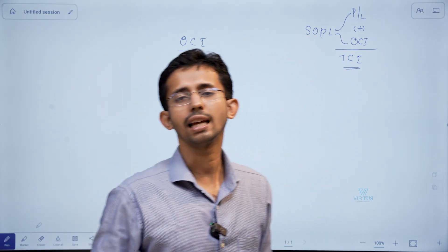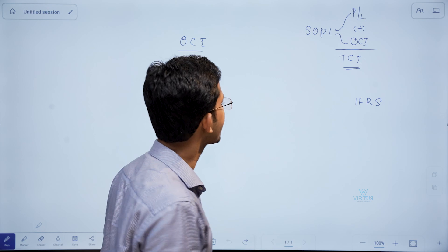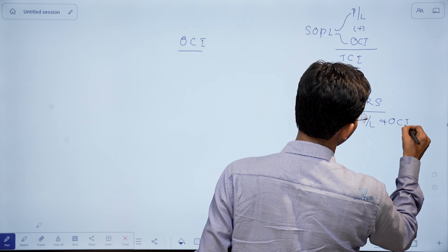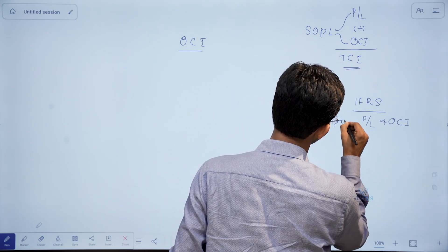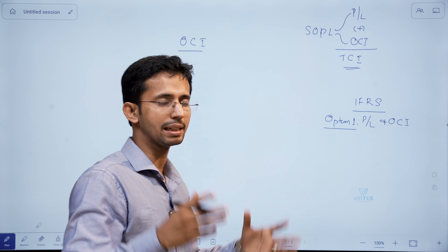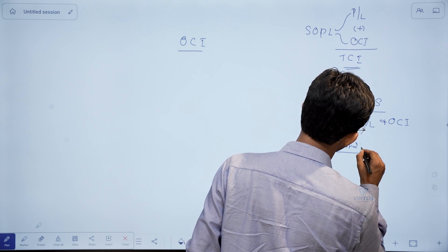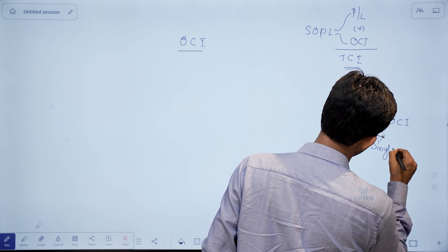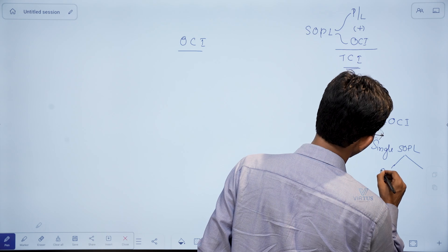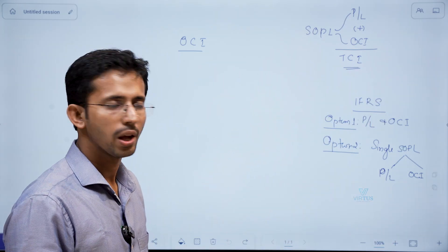If you look at the parent standard, IFRS, it gives an alternative or option to the presenters. Option one is to present the profit or loss for the period and OCI as separate statements. The second option in IFRS is to present them as one single statement — a single Statement of Profit or Loss — but this single statement will have two segments: one for profit or loss and the second for OCI.